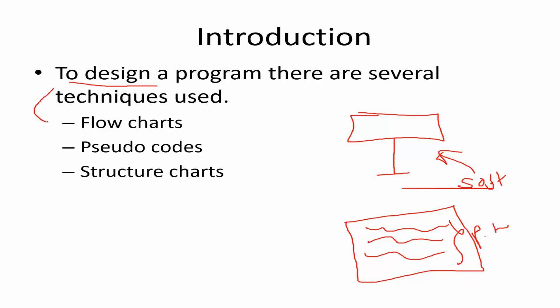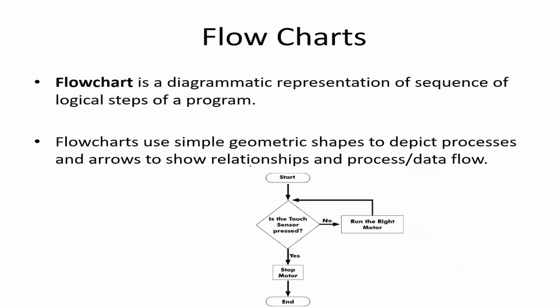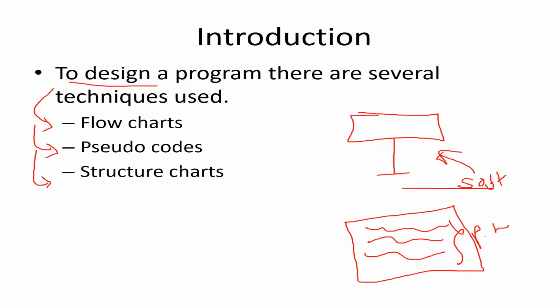To design a program, we can use either flowcharts, pseudocode, or structure charts. These are the three different design tools — three different design techniques — that we can use to design a computer program. From these three techniques, we are going to talk about flowcharts, which is a graphical representation, and pseudocode, which is a textual representation. We also have structure charts.